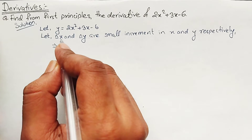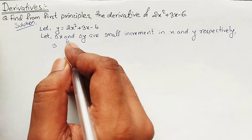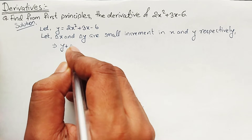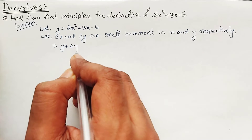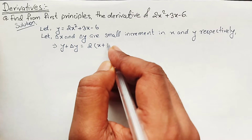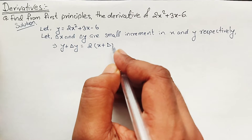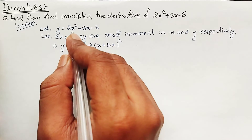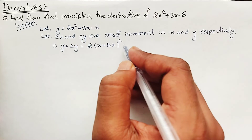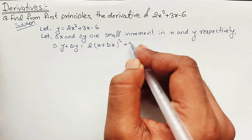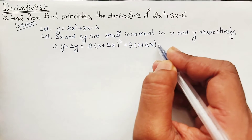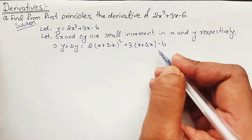If we consider a small increment Delta X in X and Delta Y in Y, we will have: y plus Delta Y equals 2 times (x plus Delta X) whole square, plus 3 times (x plus Delta X), minus 6.